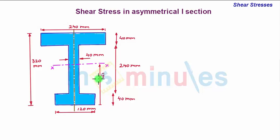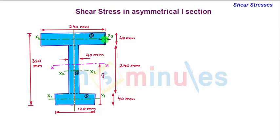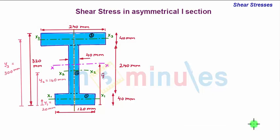To determine y-bar, we divide the eye section into three small rectangular parts labeled 1, 2, and 3. The centroidal axes x1-x1, x2-x2, and x3-x3 of each part are at distances y1, y2, and y3 from the bottom-most part of the complete eye section. By calculation: y1 = 40/2 = 20 mm, y2 = 40 + 240/2 = 160 mm, and y3 = 40 + 240 + 40/2 = 300 mm.